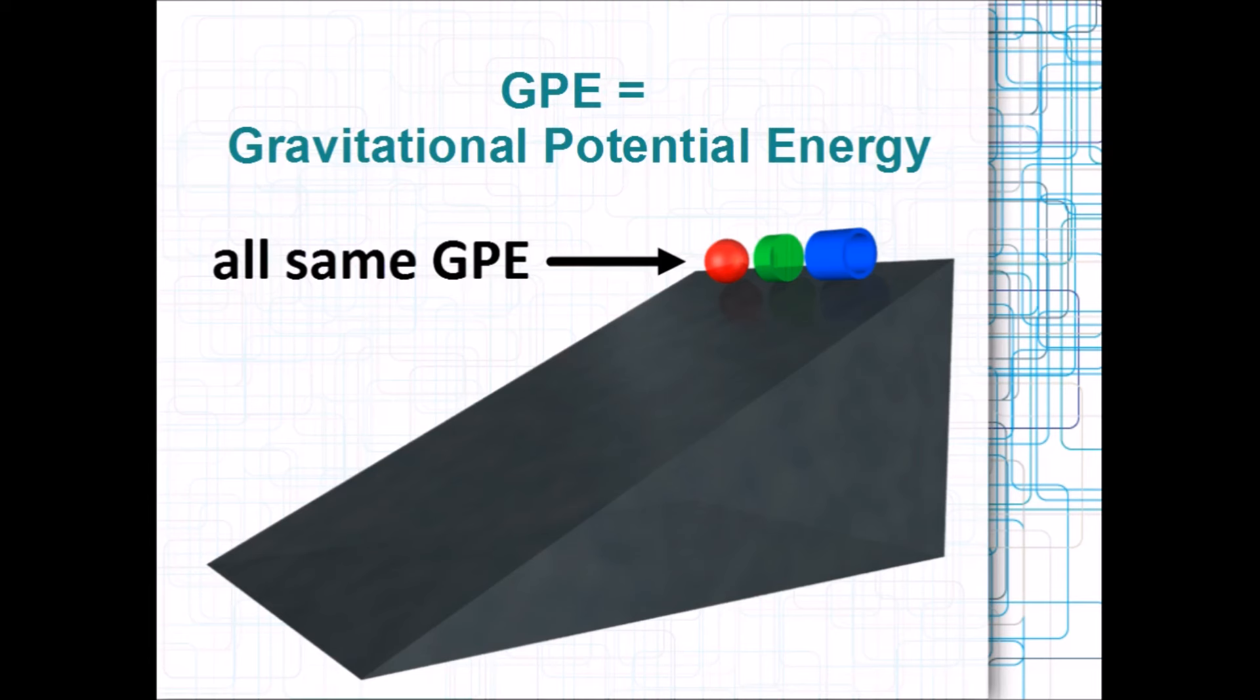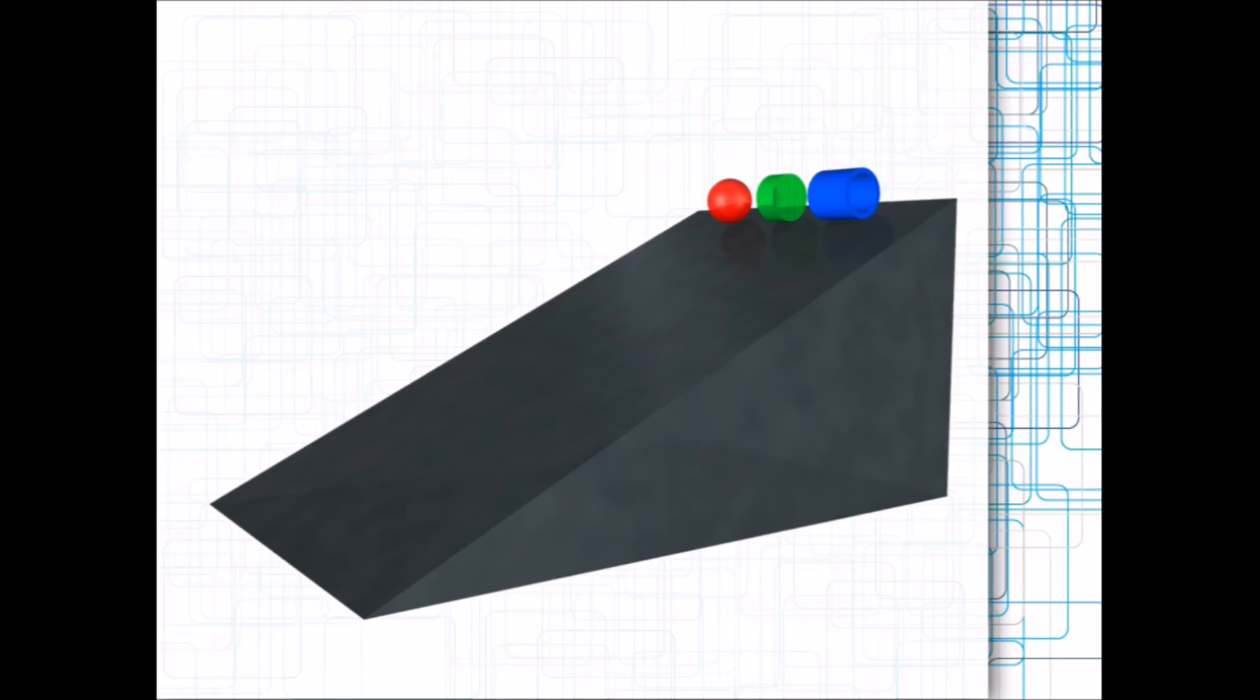Just one more thing before we start. We're going to assume that the slope is frictionless. So it's made of ice or something very smooth. So there's no friction acting on the system to take heat energy away. Who will win? Place your bets now.